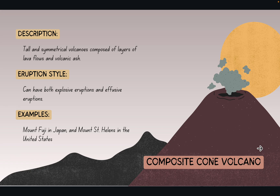Now, the composite cone volcano — or stratovolcano. It's tall and symmetrical, composed of layers of lava flows and volcanic ash. The eruption style can have both explosive and effusive eruptions. Examples are Mount Fuji in Japan and Mount St. Helens in the United States.